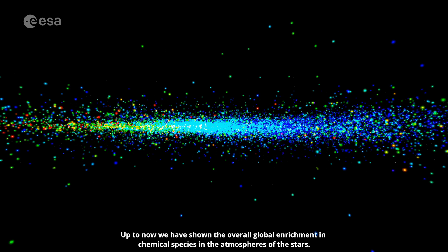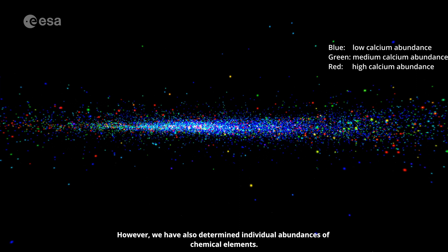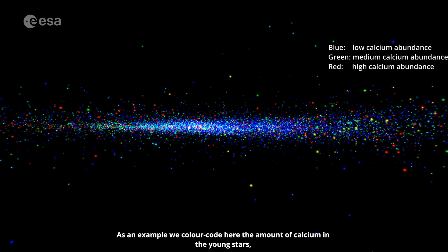Up to now, we have shown the overall global enrichment in chemical species in the atmospheres of the stars. However, we have also determined individual abundances of chemical elements. As an example, we colour-code here the amount of calcium in the young stars, an element which is, for instance, important for the stability of our bones.